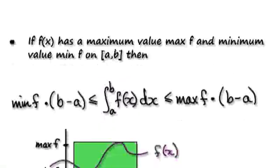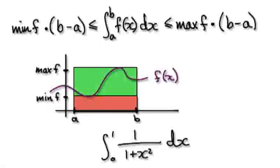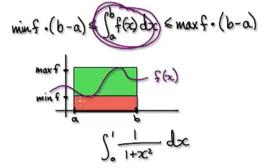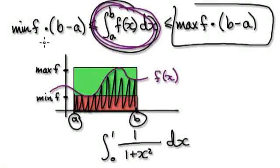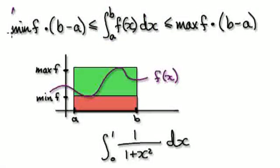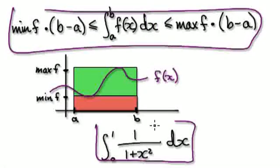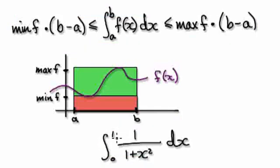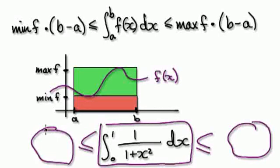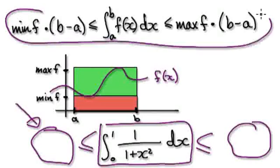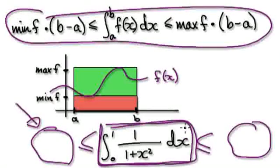Let me give you guys an example. We've seen this property before where we can trap this. This thing here is really the true area underneath the function between A and B. We can always trap this area between the biggest thing and the smallest thing. We can use this property in order to get a rough estimate of this. The aim here is to trap this between the biggest possible thing and the smallest possible thing.